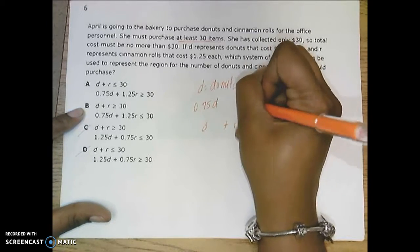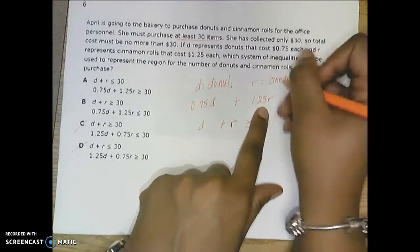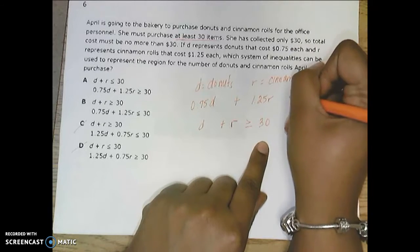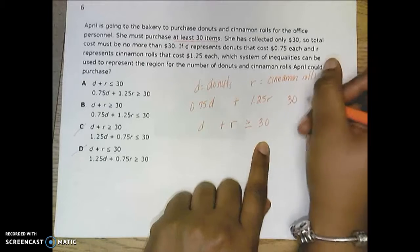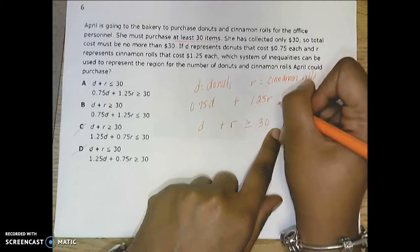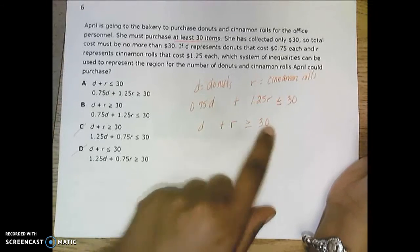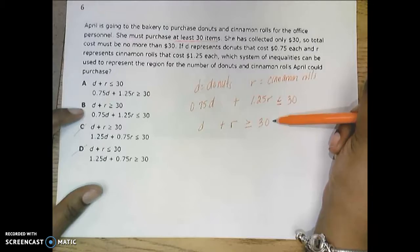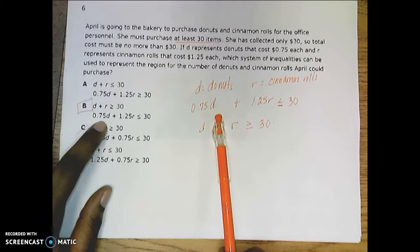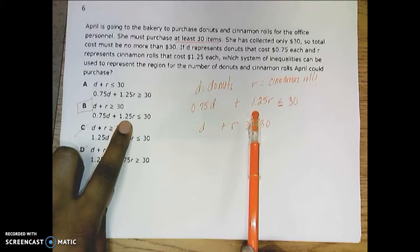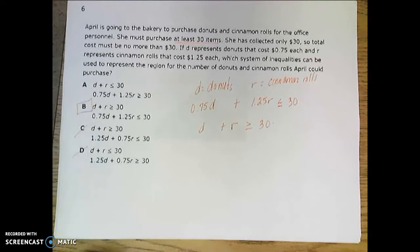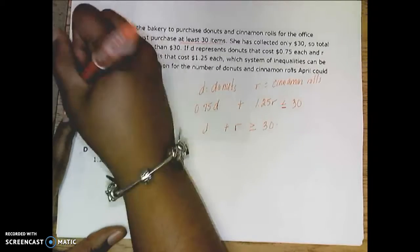Because she has to have 75 cents for donuts, $1.25 for rolls, and she only collected $30. Since all she collected was $30 for these food items, she can spend $30, but she probably prefers it if it's less than 30. So here is going to be our inequality. B is going to be our final answer. $0.75 per donut, $1.25 per roll has to be at least $30, and then she needs at least 30 donuts or rolls. So that one should be B, as in baseball.